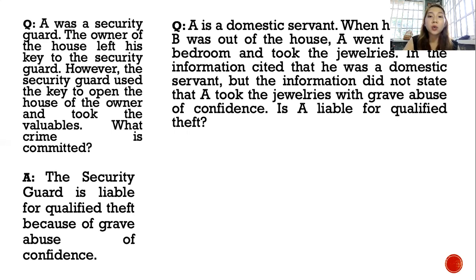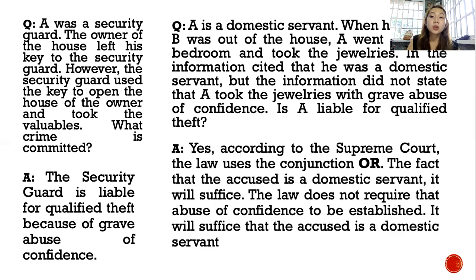Another problem: A is a domestic servant. When his master B was out of the house, A went to B's bedroom and took the jewelry. The information cited that he was a domestic servant, but did not state that A took the jewelry with grave abuse of confidence. Is A still liable for qualified theft? Yes, because according to the Supreme Court, the law uses the conjunction 'or' — the fact that the accused is a domestic servant is already stated, and it will suffice to qualify theft. The requirement of proving abuse of confidence separately is no longer needed.